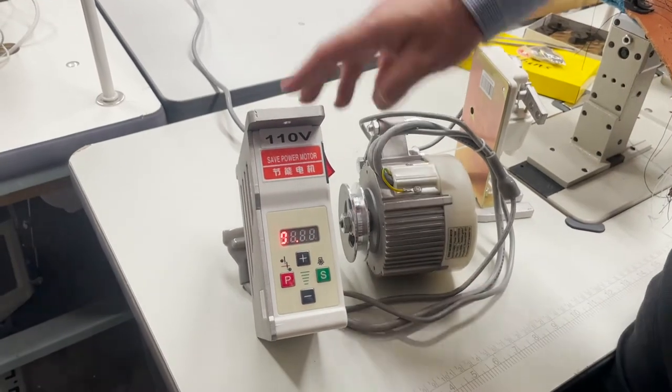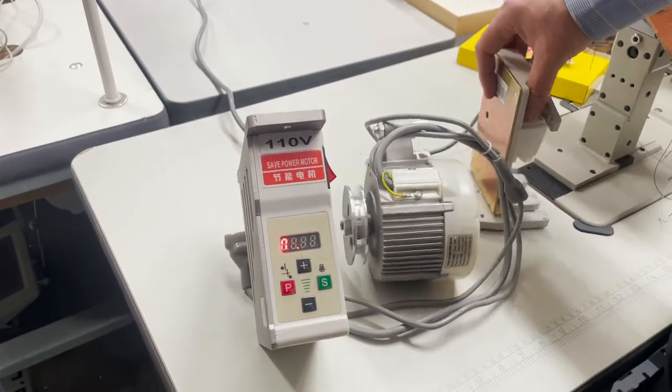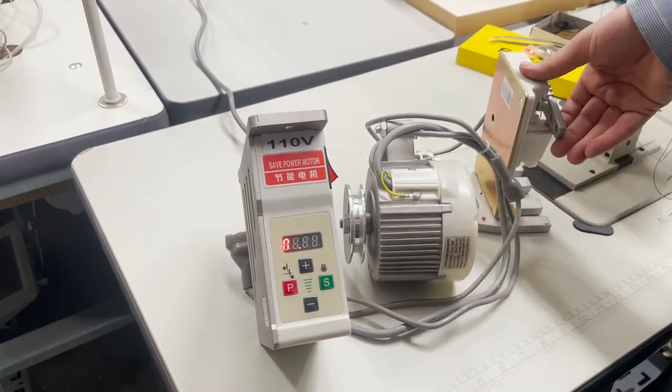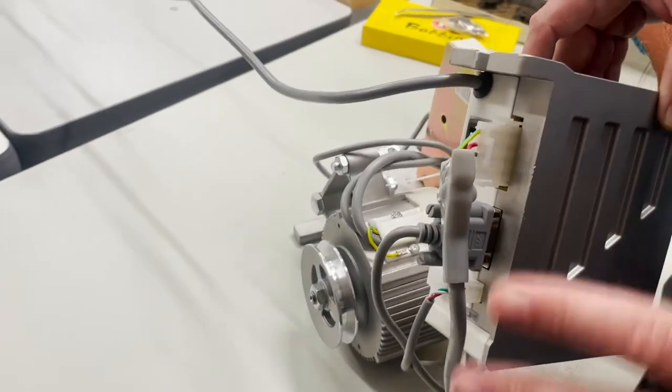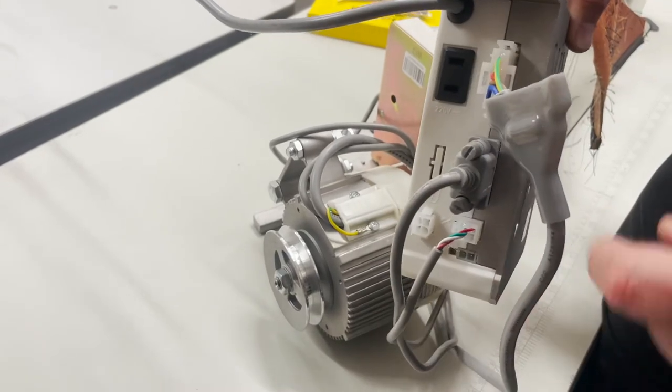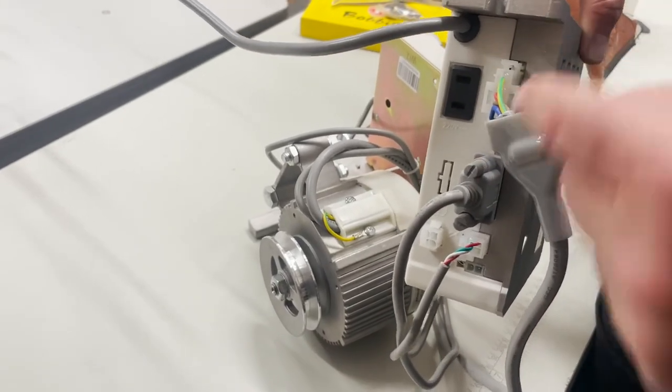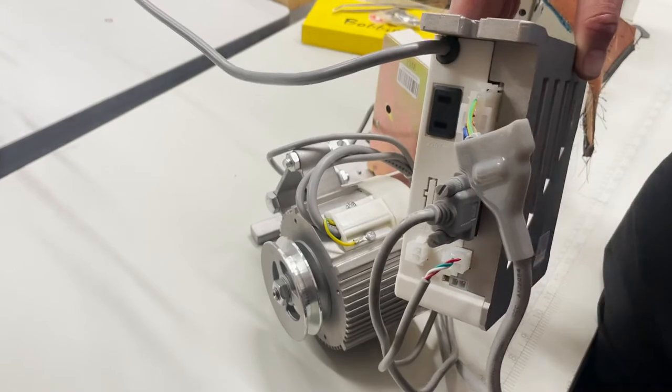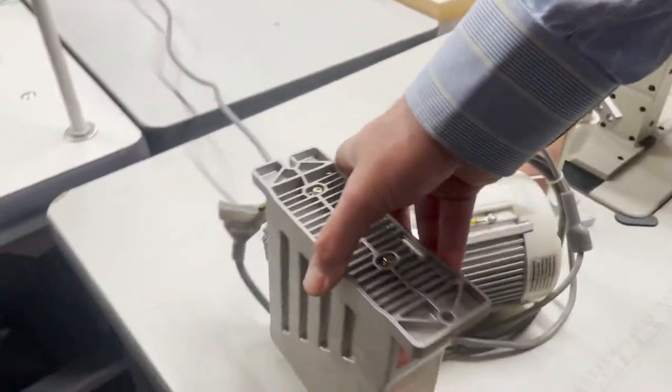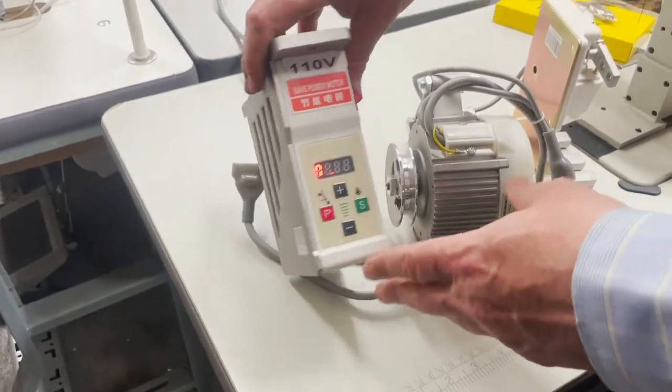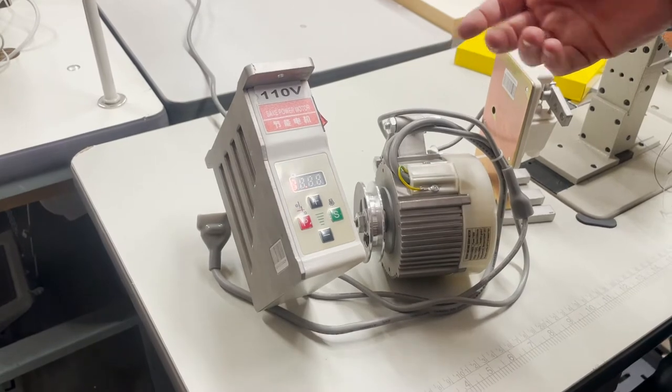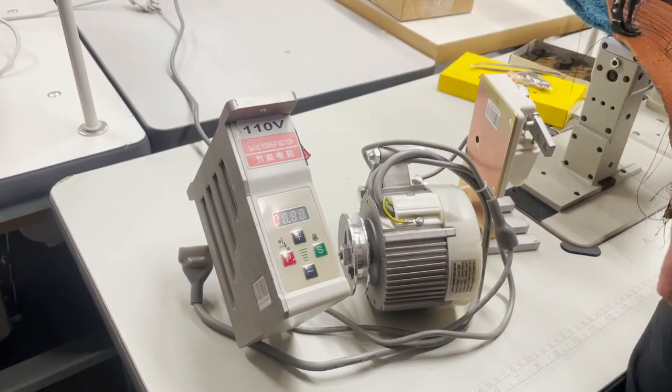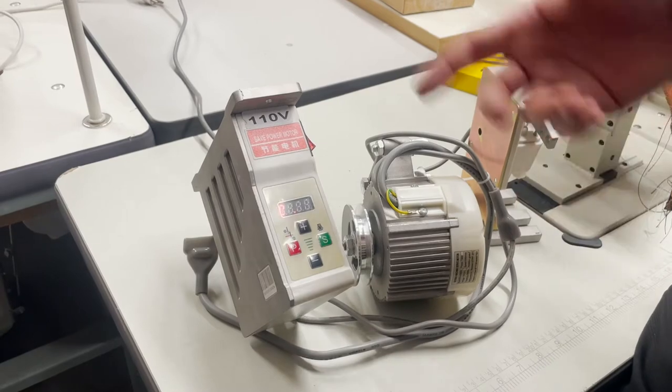Right now I've plugged this into a regular wall outlet. This is the control unit, this is the motor. Number one, when you have a problem, make sure you plug and unplug everything to check connections. A lot of times that solves the problem. This unit is from a customer who sent it back saying the motor wasn't working.